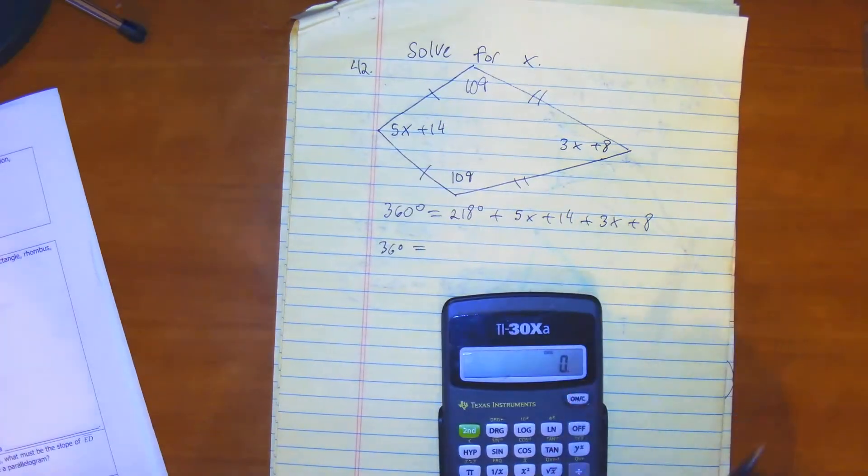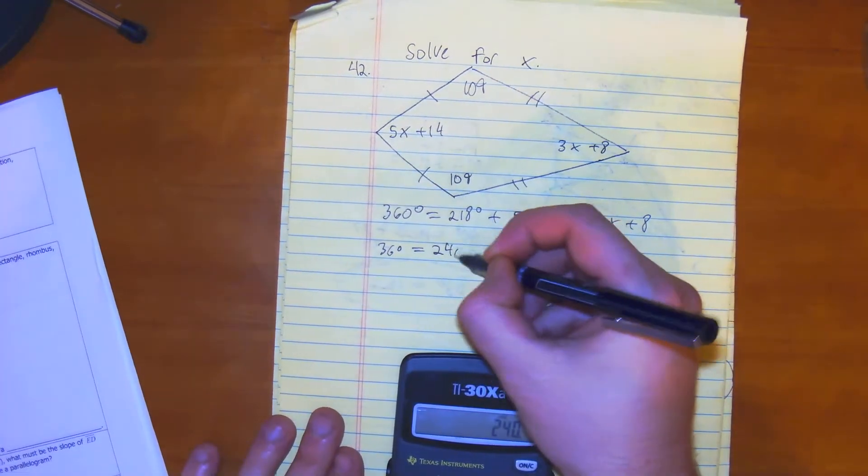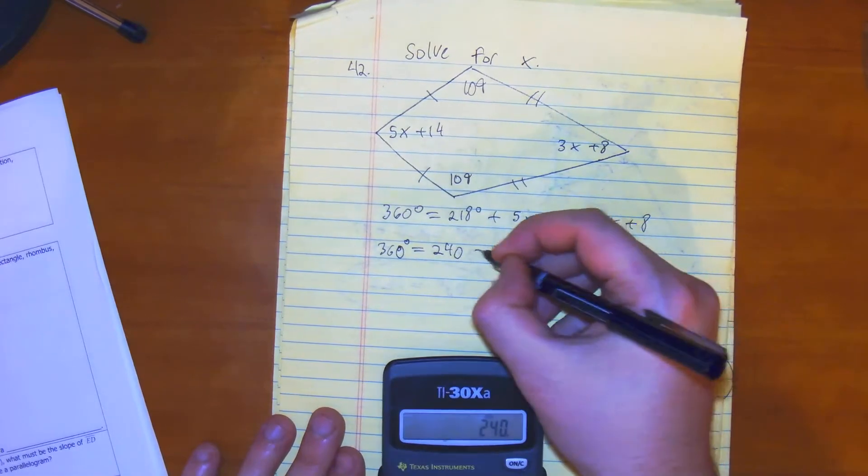We'll just add everything up, so 218 plus 14 plus 8 gets you 240. And then 5 plus 3 gives you plus 8x.